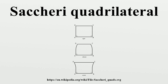As it turns out, when the summit angles are right angles, the existence of this quadrilateral is equivalent to the statement expounded by Euclid's fifth postulate. When the summit angles are acute, this quadrilateral leads to hyperbolic geometry, and when the summit angles are obtuse, the quadrilateral leads to elliptical or spherical geometry.